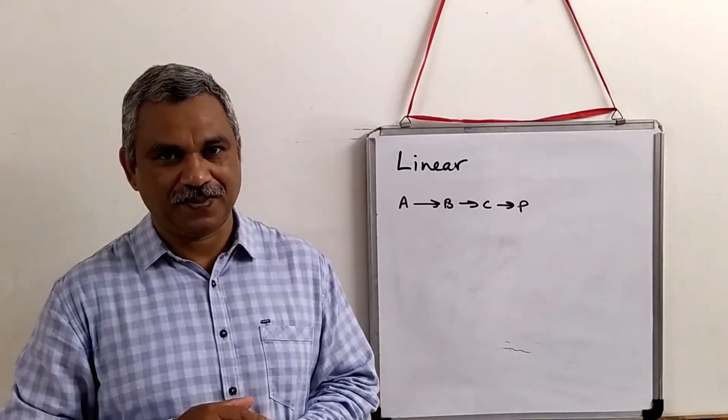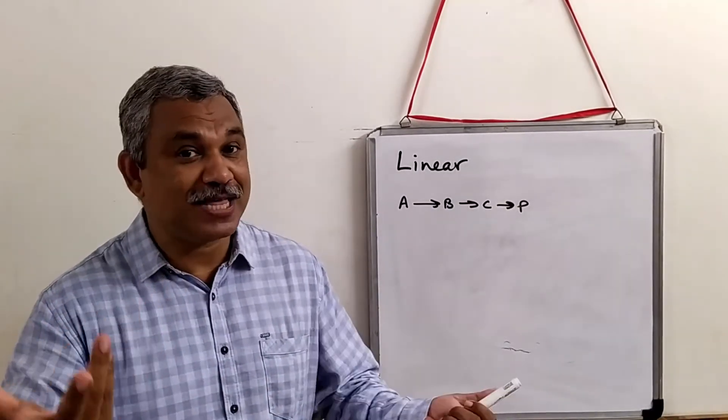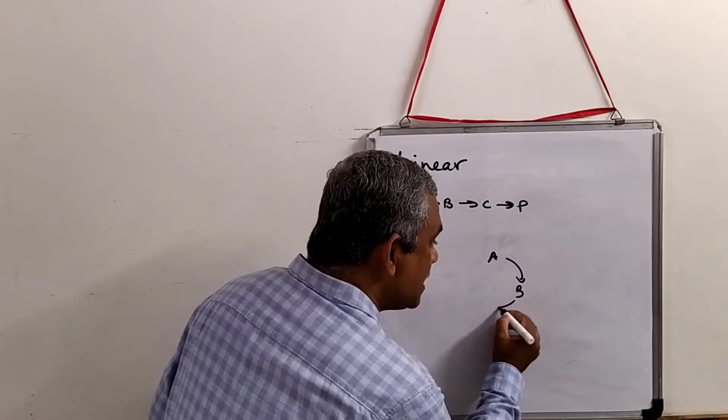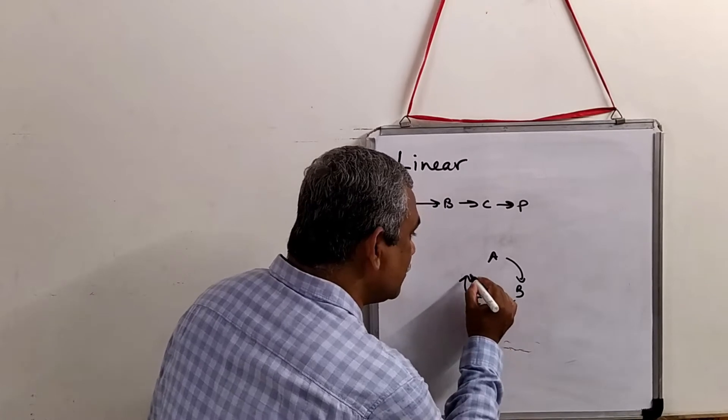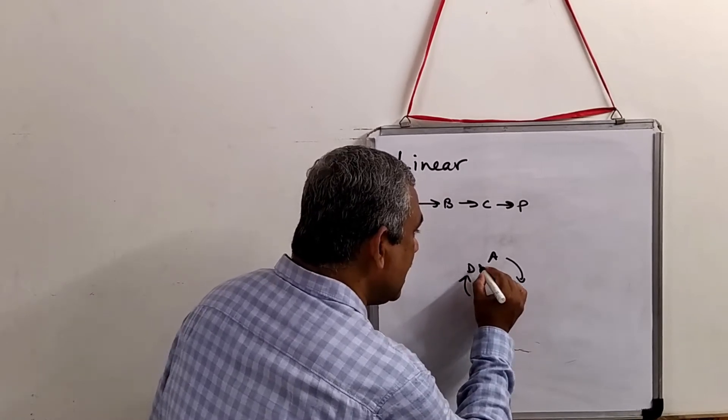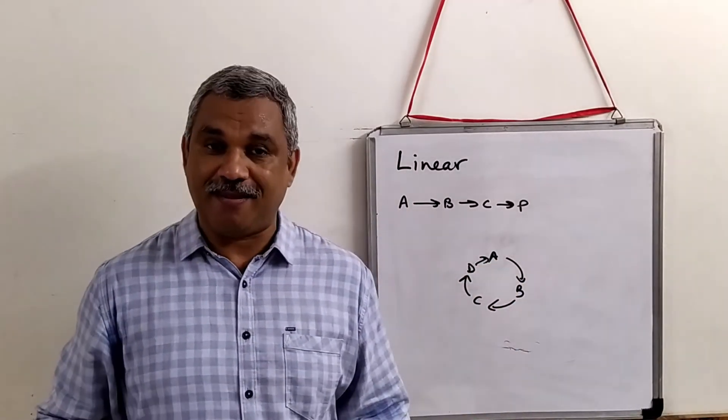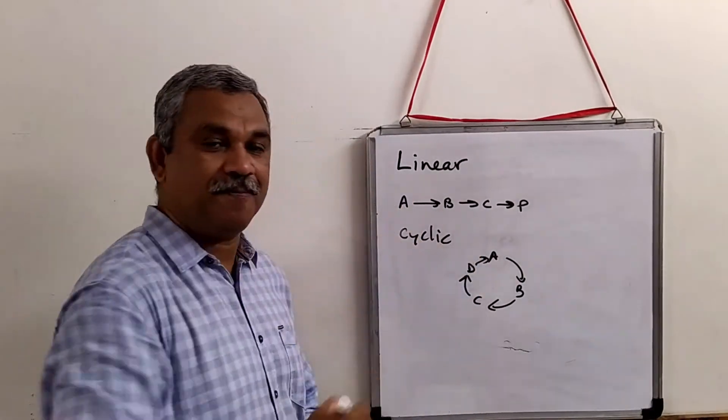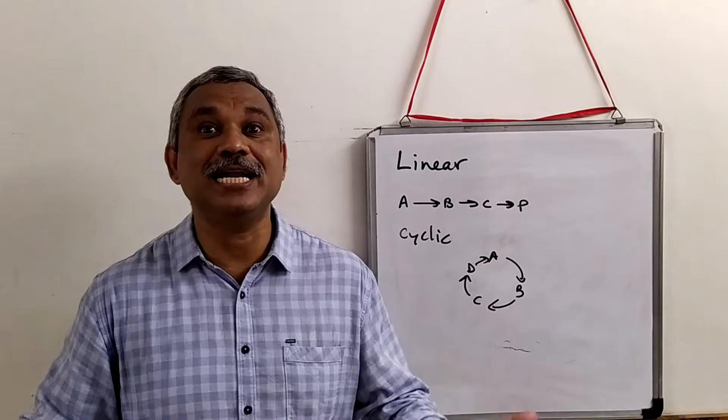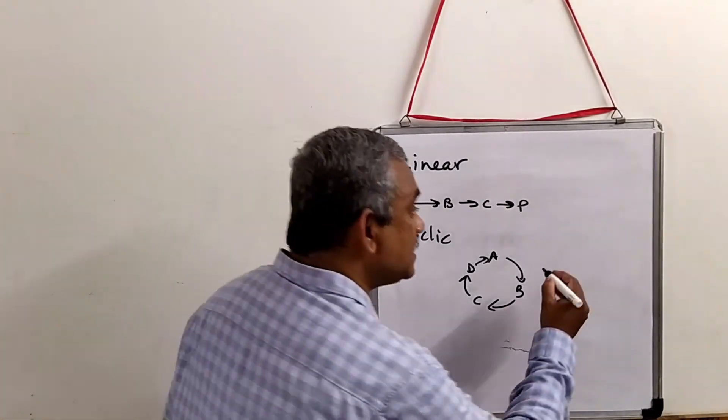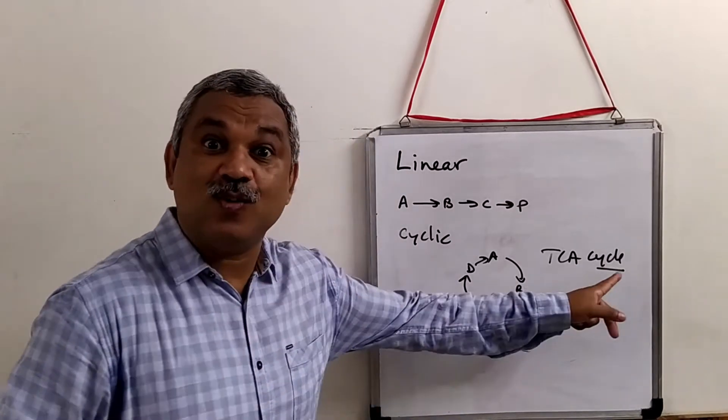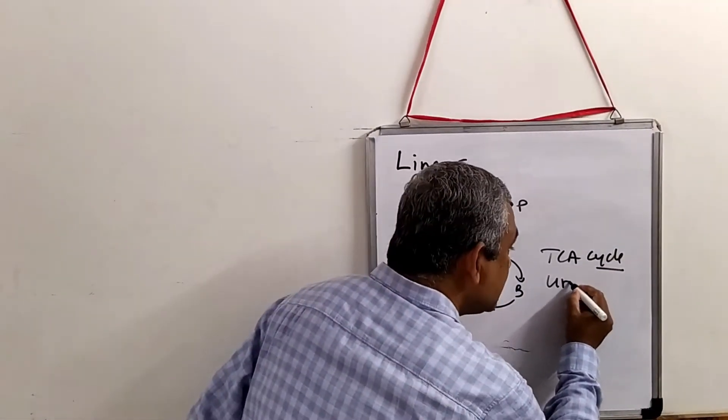In the second kind of pathway, A is converted to B, B is converted to C, C is converted to D, and D is again converted to A. It is called a cyclic pathway. Classic examples are TCA cycle - underline the word cycle - and urea cycle.